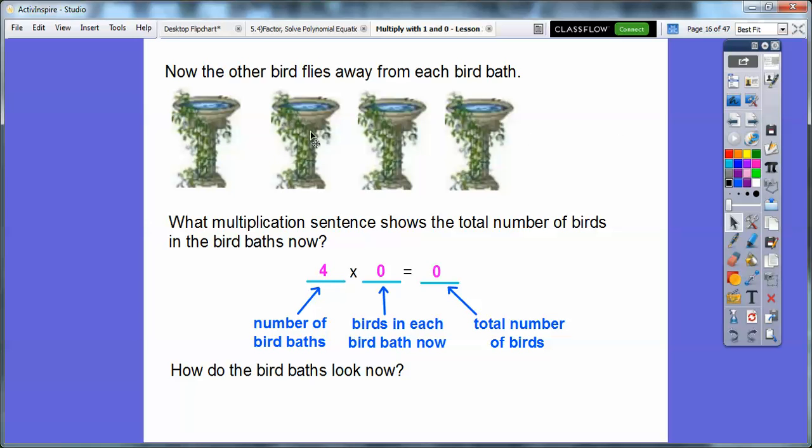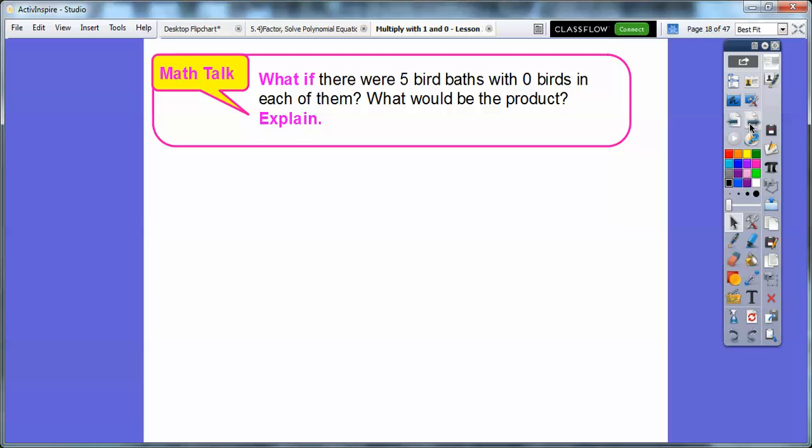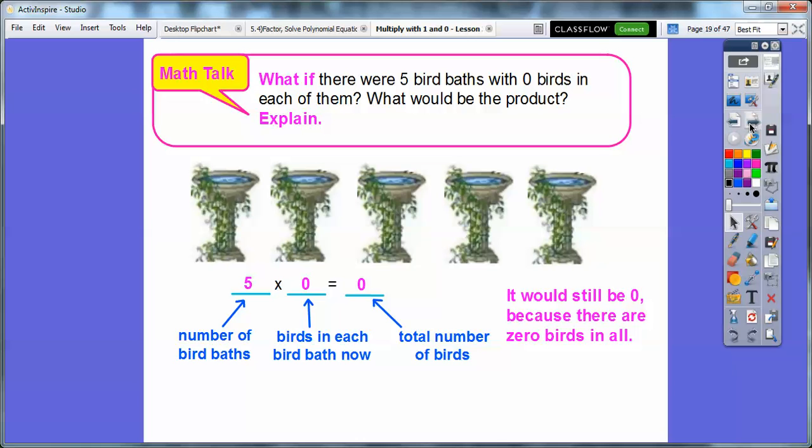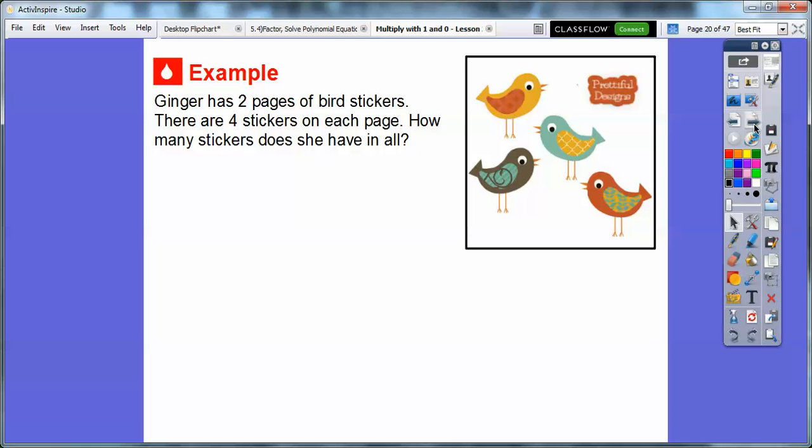So how do the birdbaths look now? Well, how do these birdbaths look? They look empty to me. I don't know what else to say except they just look plain old empty. Hey, what if there were five birdbaths with zero birds in each of them? What would be the product? We'd still get zero birds. There's five birdbaths, but none of them have birds in it. So it would still be zero. Five times zero also equals zero. In fact, any number times zero will be zero.